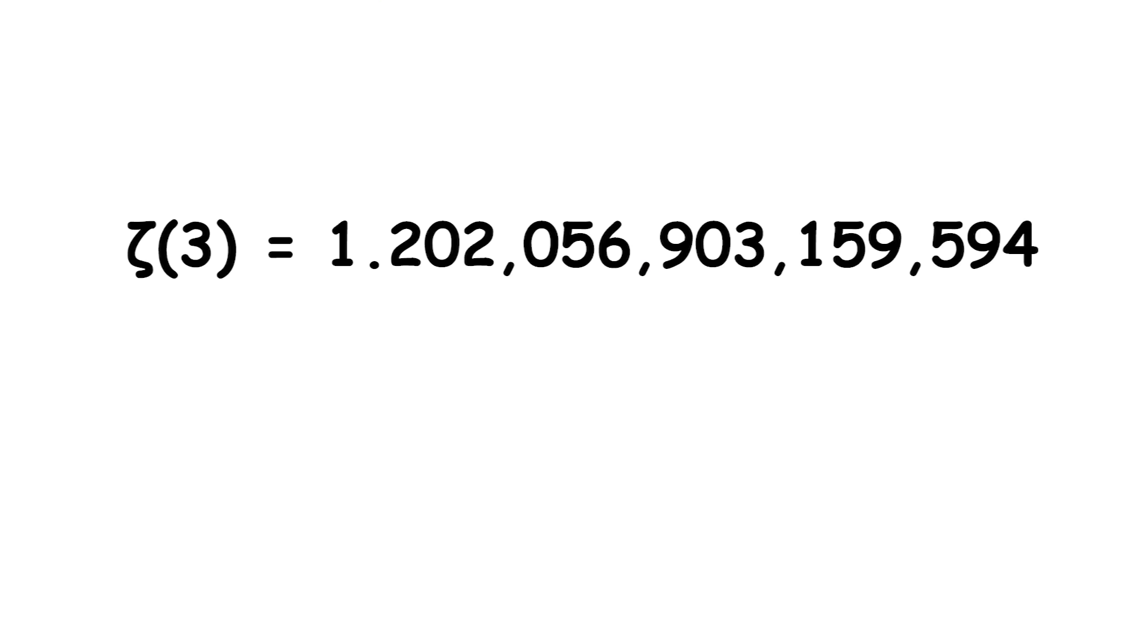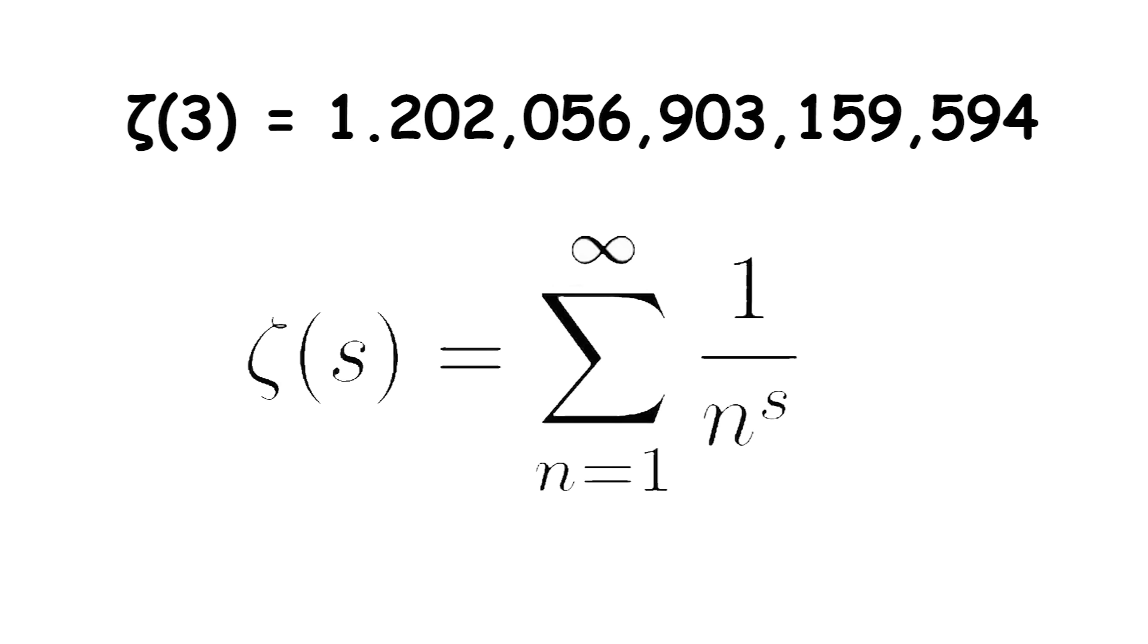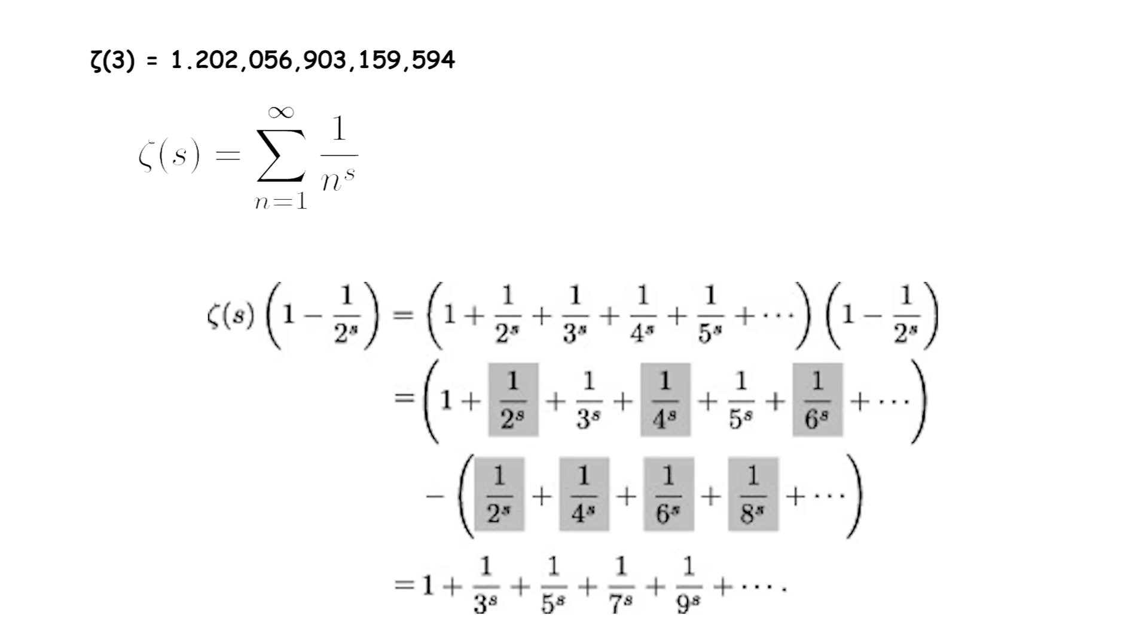Apéry's constant is the value of the Riemann zeta function evaluated at the argument 3. It has an approximate value of 1.202. The Riemann zeta function, denoted by zeta, is a function of a complex variable S that generalizes the harmonic series. It is defined like this. When S equals 3, the series converges to Apéry's constant. It is a special value of the Riemann zeta function, which is a fundamental function in number theory and has deep connections to the distribution of prime numbers.